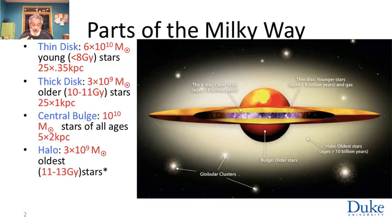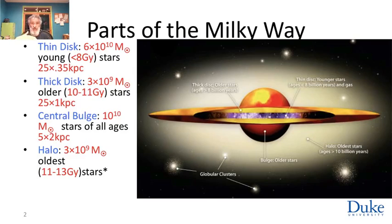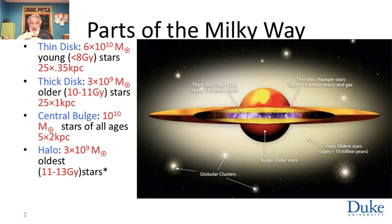The thin disk is surrounded by a thicker disk with about the same radius but three times the thickness — 3,000 light years, or about a kiloparsec. The total mass in the thick disk is only about three billion solar masses. The thick disk permeates the thin disk as well, but the stars are scattered more diffusely. What characterizes the thick disk population is that the stars are older, typically eight to eleven billion years, making two distinct stellar populations. But the bulk of the mass remains in the thin disk.